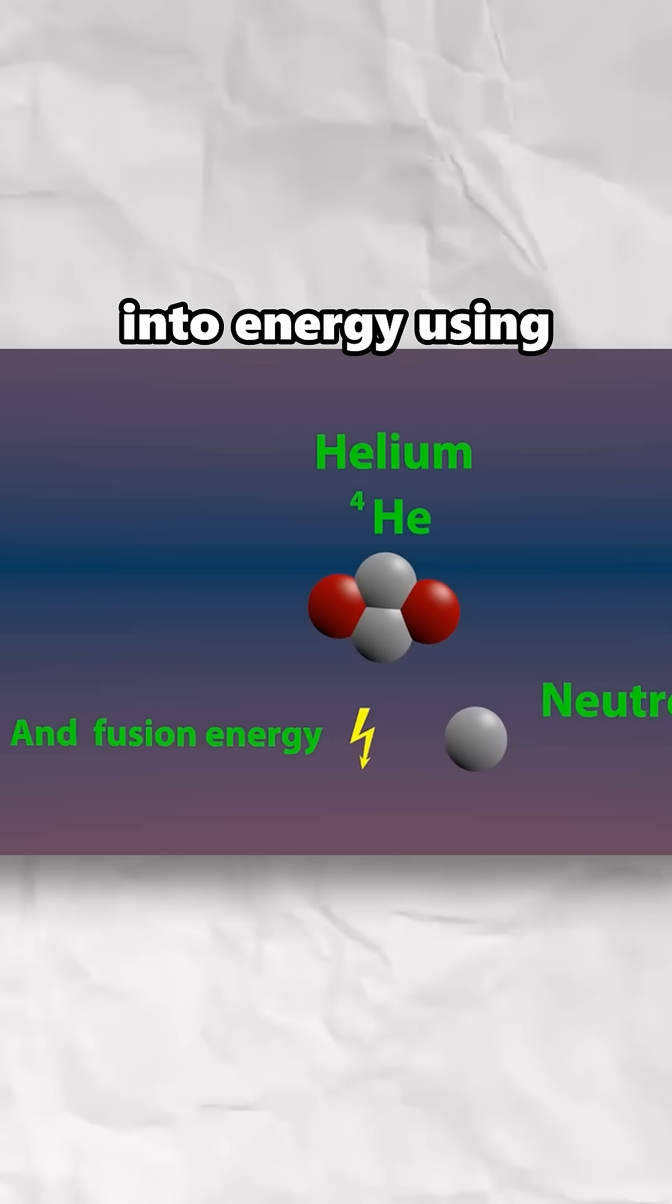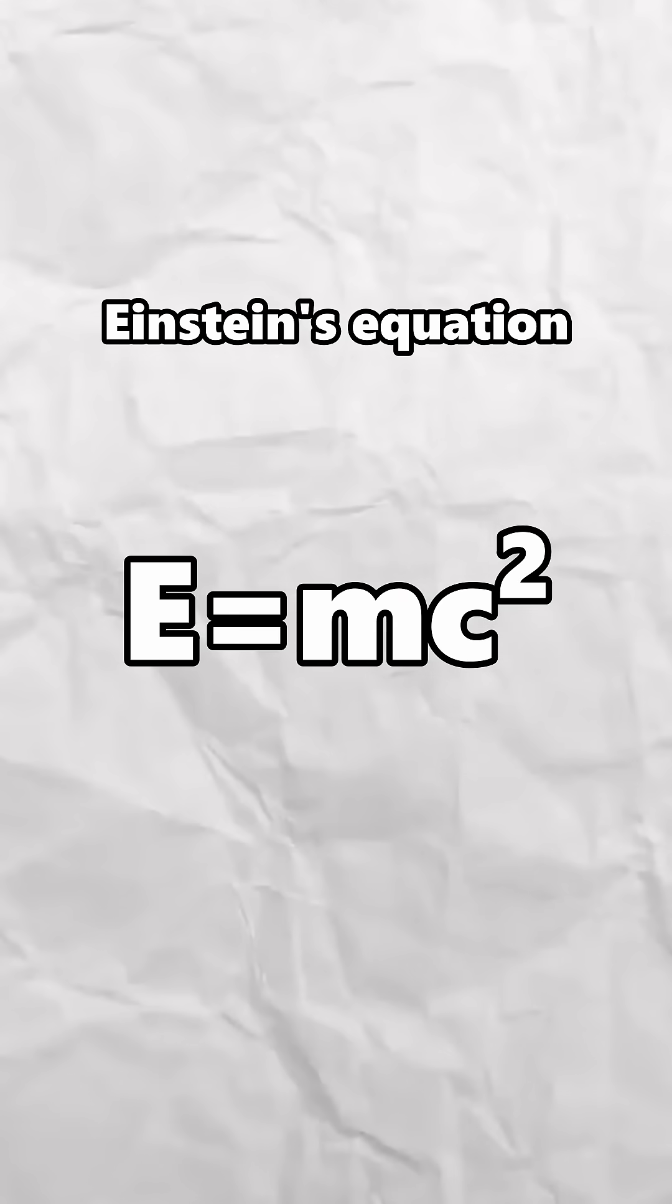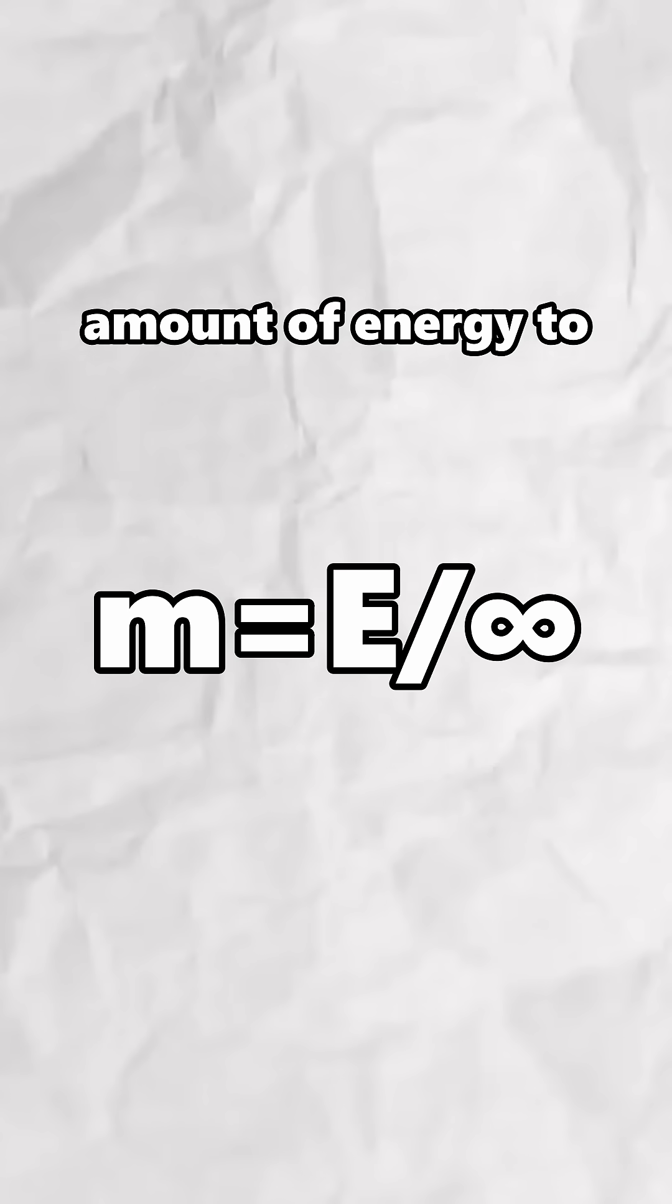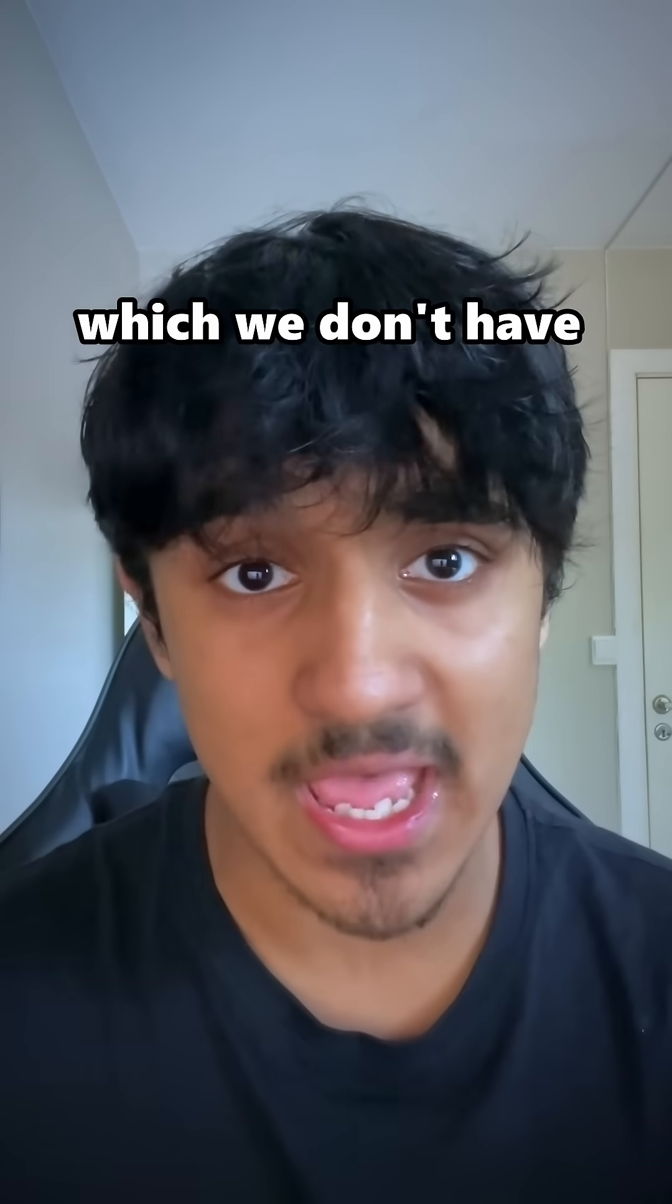which converts mass into energy using Einstein's E equals mc squared equation. But if c were infinite, you would need an infinite amount of energy to turn any mass into light, which we don't have in the universe.